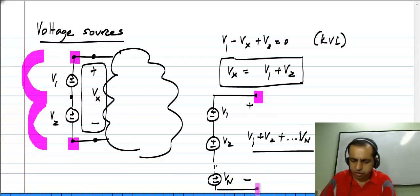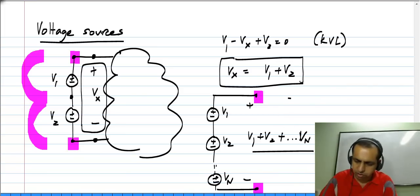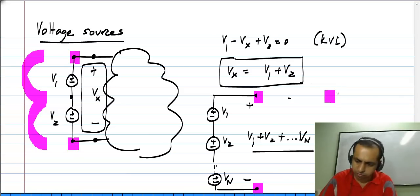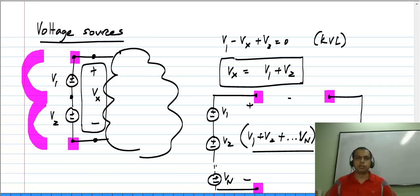This whole thing between these terminals is equivalent to a single voltage source V x whose value is given by that summation. A series combination of voltage sources behaves like a voltage source, and the value of the voltage source is the sum of the individual voltage sources. Of course, you have to sum the voltages in the appropriate polarity.